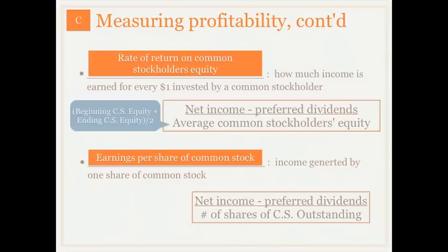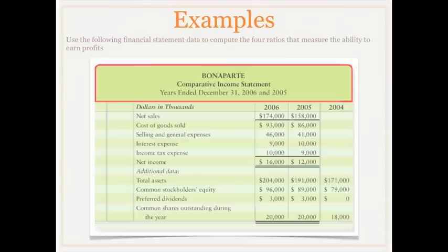So let's take some example data and calculate these numbers and then discuss them. Here is financial data that we've actually seen before — a comparative income statement for 2006 and 2005, and some additional data from 2004. I'd like for you to attempt to calculate the rate of return on common stockholders' equity as well as the earnings per share of common stock. Push pause on your player now, calculate those two, and we'll come back and discuss them.